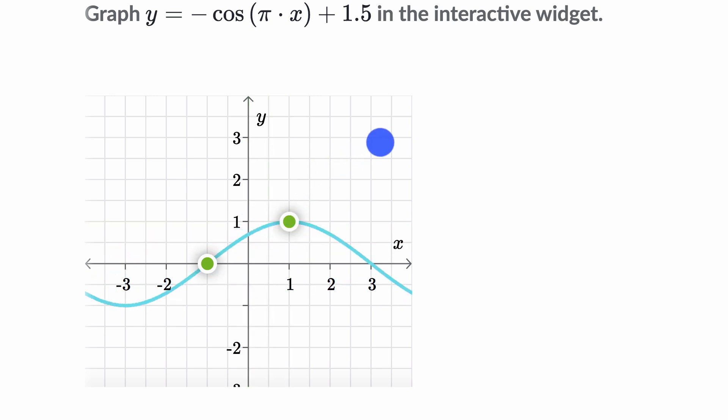So there's a couple of ways that we could approach this. First of all, let's just think about what would cosine of pi x look like? And then we'll think about what the negative does and the plus 1.5.